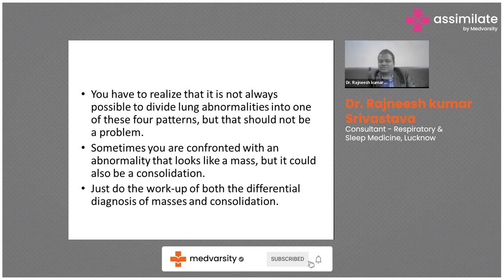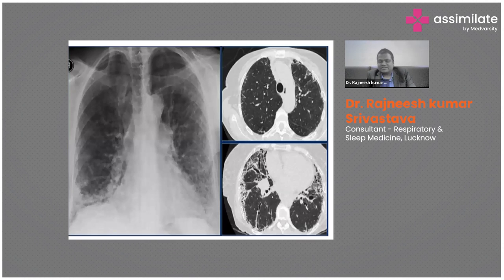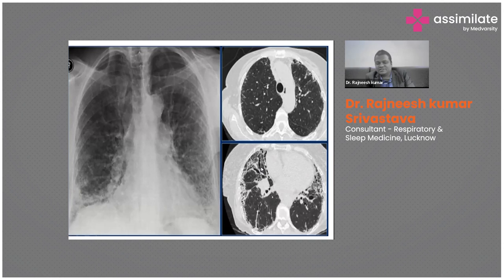Returning to the X-ray showing reticular shadows — when CT was performed on this patient, a characteristic ILD pattern was identified. We must acquaint ourselves with CT patterns of interstitial lung diseases. On CT we can see septal thickening, and there is also bronchiectasis visible. The bronchiectasis seen in ILD is known as traction bronchiectasis because it is secondary to fibrosis, not the same as that seen in cystic fibrosis.